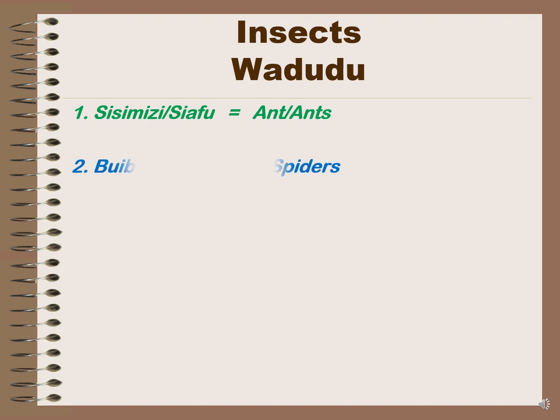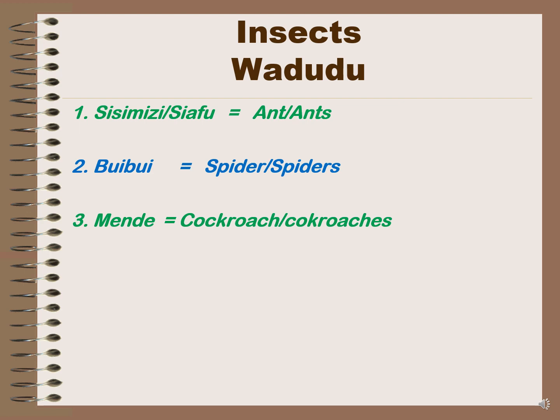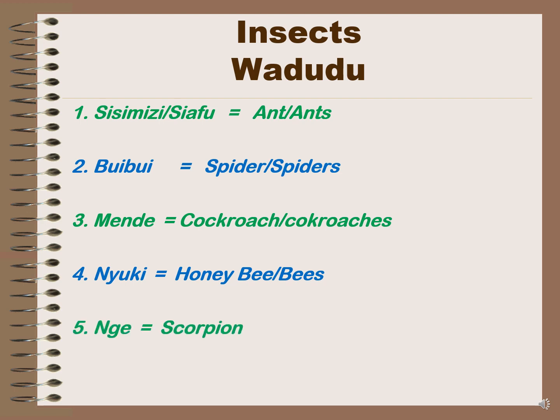'Buibui' is spider or spiders. 'Mende' can be cockroach or cockroaches in English. Number four, we have 'nyuki' meaning honeybee or honeybees. 'Nge' is scorpion — even in plural form the name remains the same; there is no separate plural form for nge.